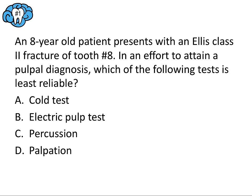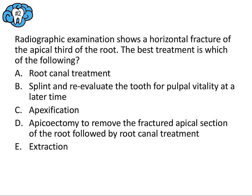EPT, or electric pulp test, is by the numbers the least reliable pulp vitality testing method we have. So the answer is B. For the board exam, remember that percussion is generally regarded as the most reliable testing method, while EPT is generally regarded as the least reliable method.